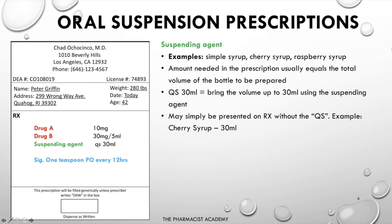What is the difference between 'QS to 30 mL' versus just '30 mL'? You use 'QS to 30 mL' when you don't know exactly how much cherry syrup you'll be adding — for example, when you have powder in a bottle and you add the suspending agent until the total volume reaches 30 mL, accounting for the volume displaced by the powder. When it just says 'cherry syrup: 30 mL,' you know exactly how much to add.